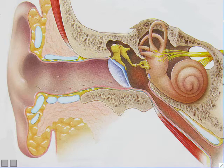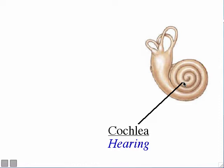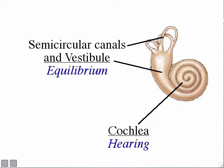Getting back to the picture of the inner ear: the cochlea part of the inner ear is where your hearing sense is located — at least the major part of your hearing sense is inside the cochlea. Whereas the vestibule and the semicircular canals are where your equilibrium sense is housed. We'll begin with the hearing sense, then move on to the ear's equilibrium sense.